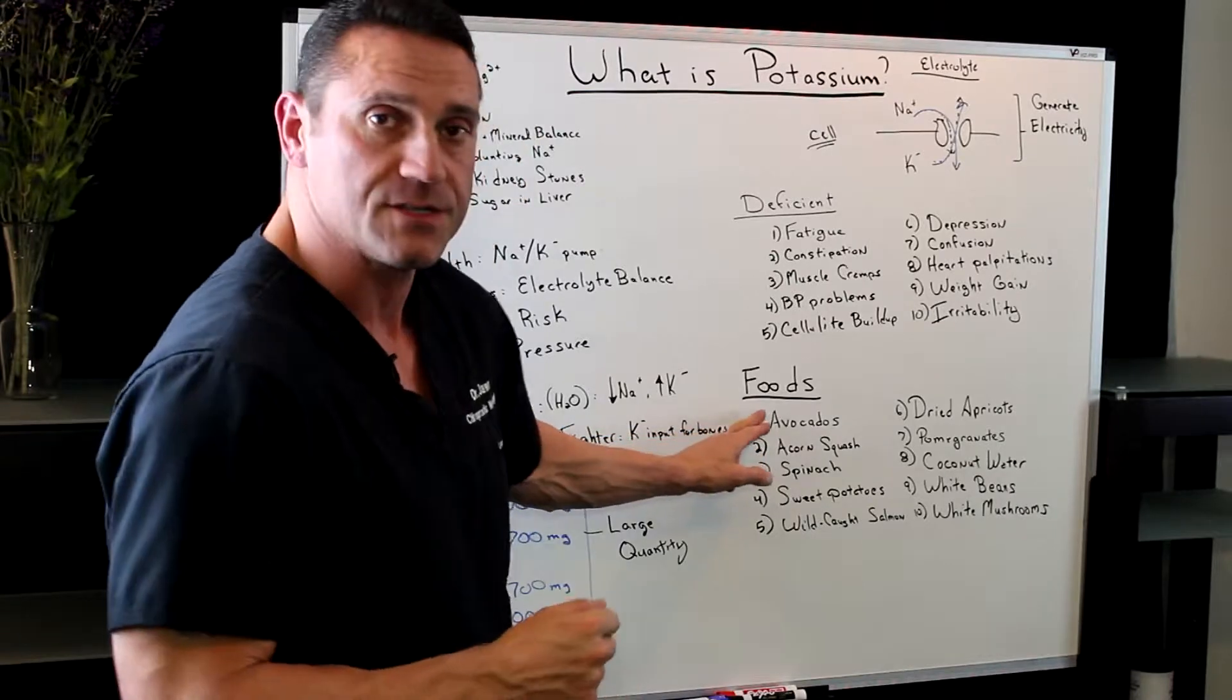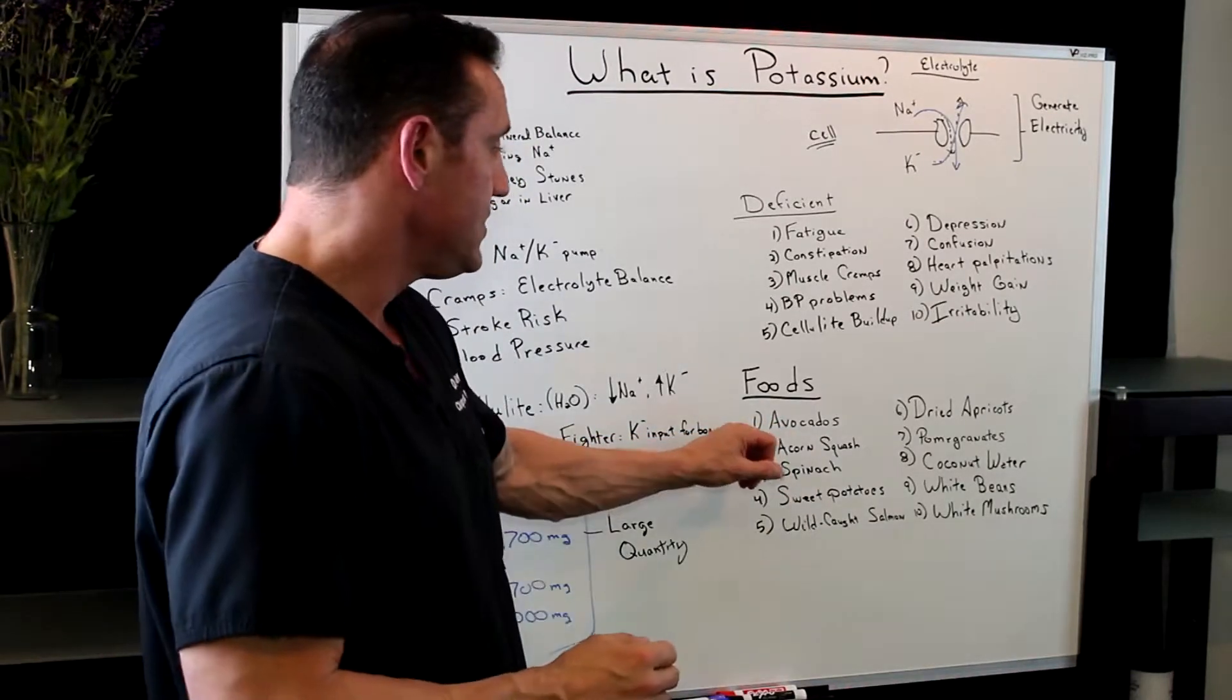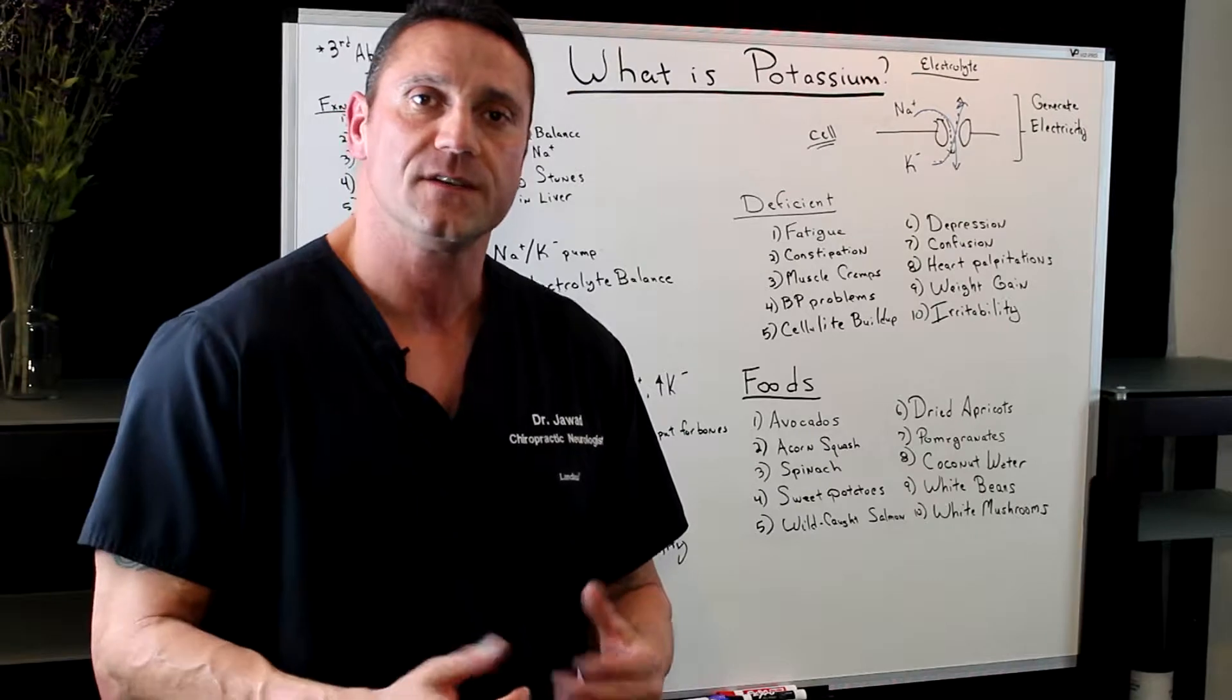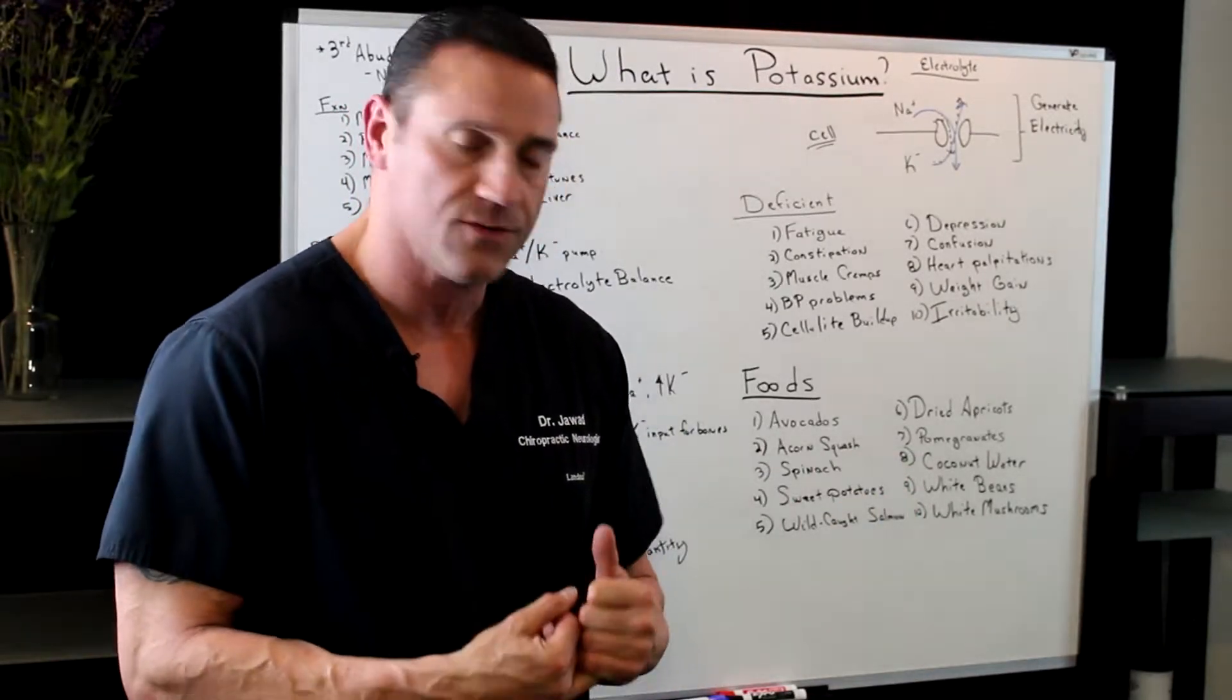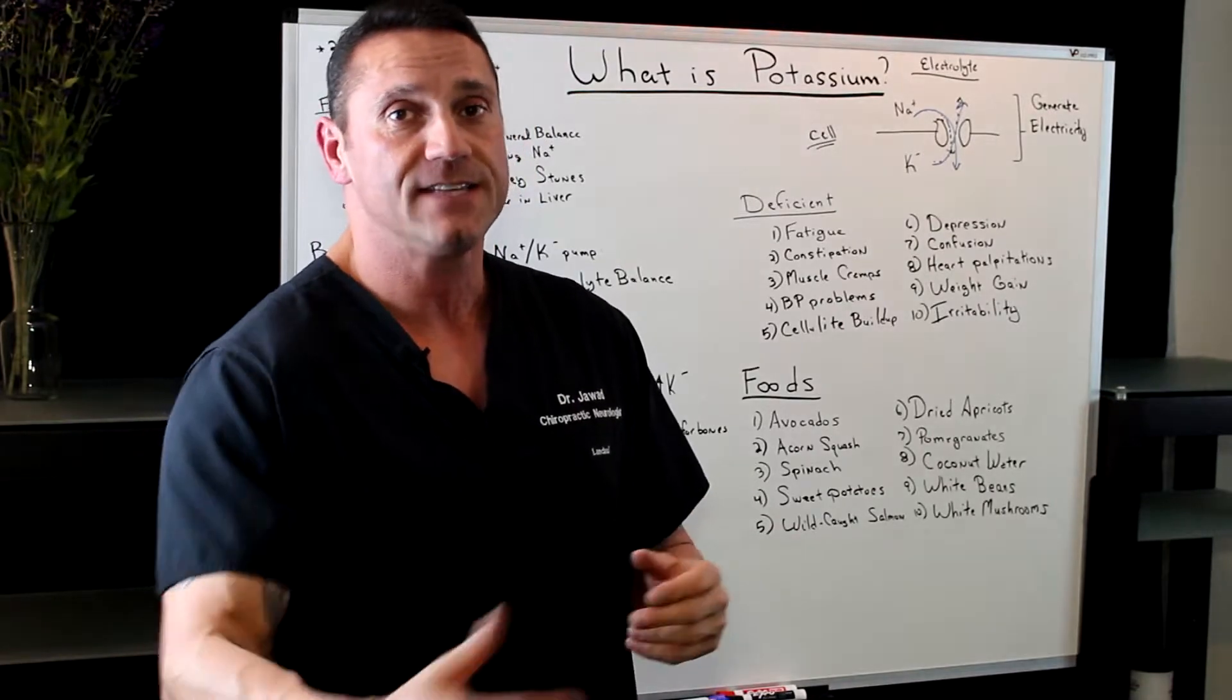Number one, avocados, loaded potassium. Two, acorn squash. Actually, any type of squash is high in potassium, whether acorn squash, butternut squash, or any of the squashes out there, it's high potassium.